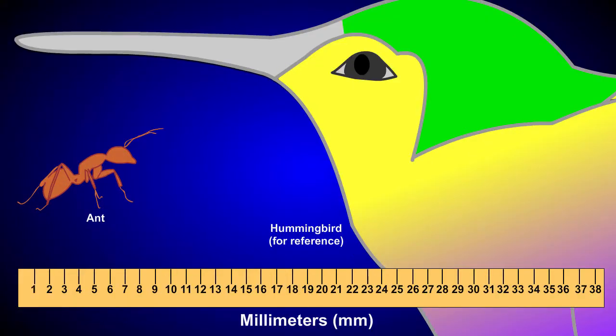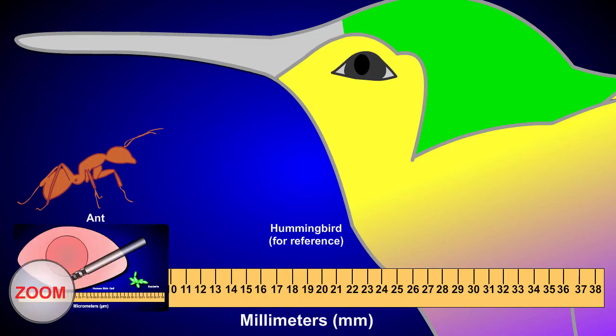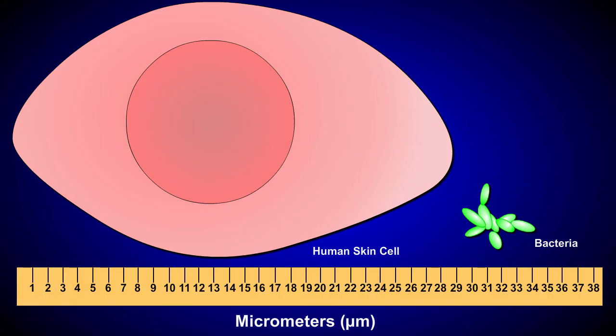Micrometers are a thousand times smaller than millimeters. Single cells are often measured in micrometers. A human skin cell is about 30 micrometers in diameter, while bacterial cells range in size from 0.5 to 5 micrometers.